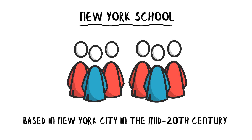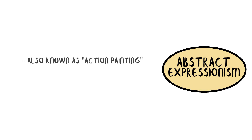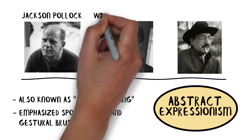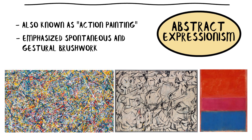The New York School refers to a group of artists based in New York City in the mid-20th century who played a significant role in shaping American art. Within the New York School, two prominent movements were Abstract Expressionism and Color Field Painting. Abstract Expressionism, also known as Action Painting, emphasized spontaneous and gestural brushwork to convey emotions and express the artist's inner world. Artists like Jackson Pollock, Willem de Kooning, and Mark Rothko were notable figures of this movement. Their works often featured large-scale canvases filled with energetic brushstrokes and abstract forms, creating a sense of dynamism and emotional intensity.